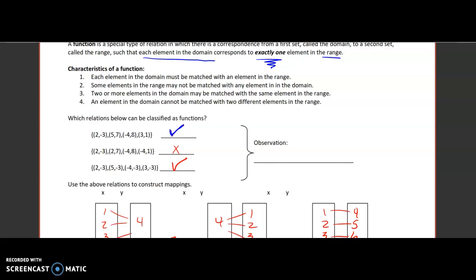The second one, the x values did repeat, so we said it was not a function. And the third one, the x values do not repeat, so we said that one was a function. The observation that we made was that the x values can't repeat in functions, because one x can only go to one y, and if the x values repeat it is not a function.